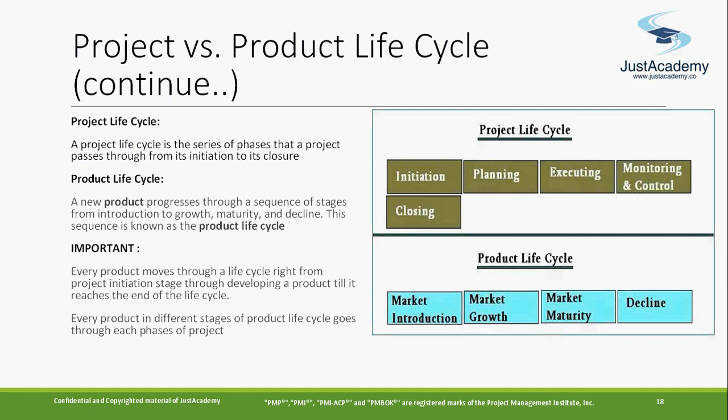Now let's talk about product scope versus project scope. Project scope is bigger — like an umbrella — because in one project you're going to develop some product. The project scope is bigger than the product scope because for that project you're going to develop one product. Also, the product lifecycle has a much larger duration, while the project lifecycle duration is only for that specific project itself.